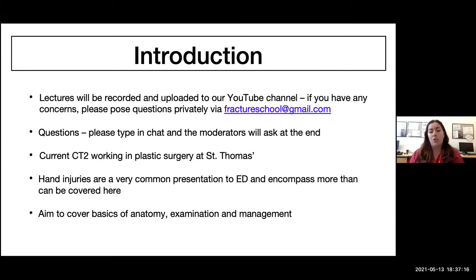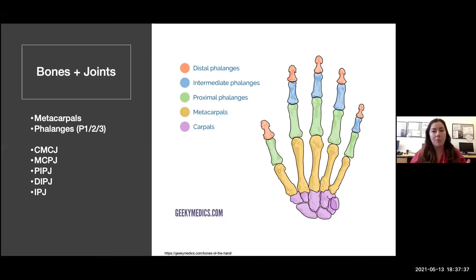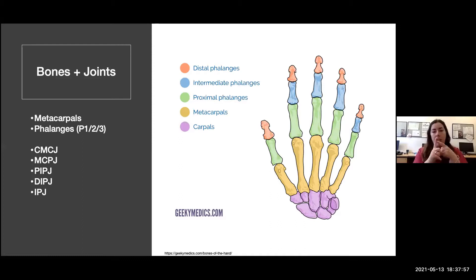We'll cover the basics of anatomy, how to manage and examine them properly, and when to refer on. Starting with the anatomy - it looks very complex but we'll break it down. The metacarpals are in yellow, the phalanges in blue, green, and red. When making a referral to the hand team - either plastics or orthopedics - we refer to phalanges as P1, P2, P3 from proximal to distal, and you need to tell us if there's a joint involved.